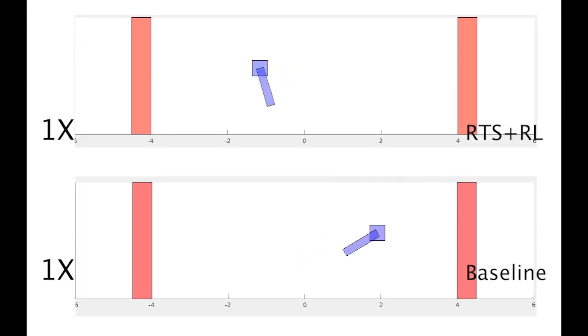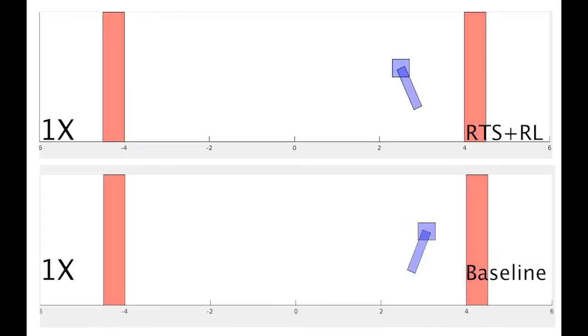After training, both agents achieve similar swing up motion when initialized from the middle of the track. However, when initialized near the end of the track, the agent without RTS crashes into the wall while our method remains safe.